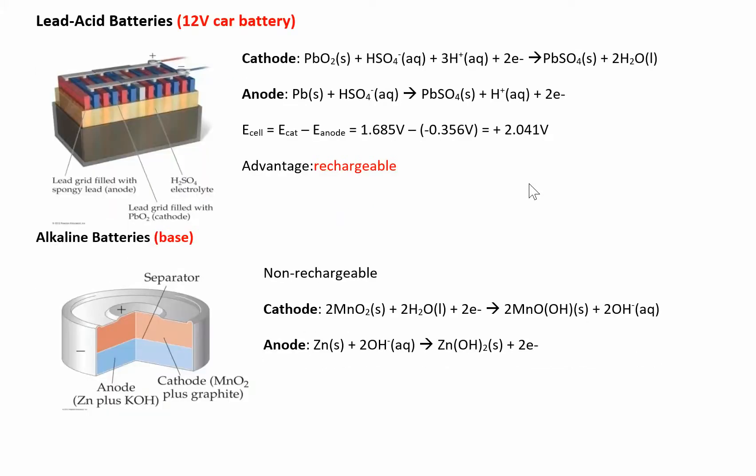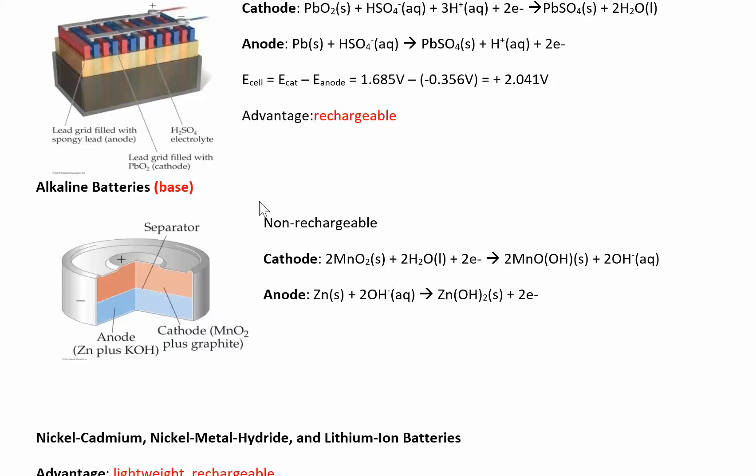Opposite of that, alkaline batteries - alkaline means base, right? So now you have a base battery. These are the ones like those little double-A batteries that you kind of throw away. These are disposable, they're non-rechargeable. You might have a triple-A one in your calculator if you don't use the rechargeable ones. They're in a basic medium, so you have KOH, that's your base. There's your anode and your cathode. These are the non-rechargeable ones, so it's kind of a disadvantage, but they're pretty cheap.